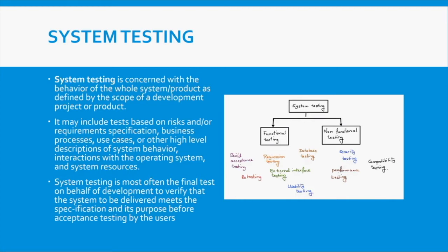System testing is often the final test of the application before acceptance testing by users. Some teams also perform system integration testing after this. In system testing, you focus on both functional and non-functional testing of the system.